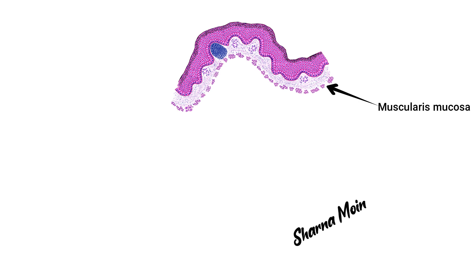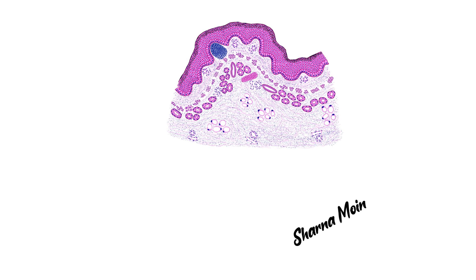Below the lamina propria you can see the fine and thin smooth muscle layer — this is the muscularis mucosa. This smooth muscle layer separates the mucosa from the submucosa and also helps in the movement of the mucosa by its contraction. So all these three layers together form the mucosa.